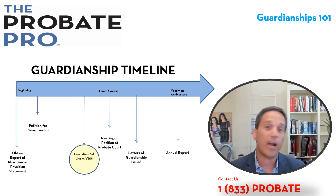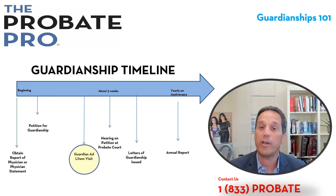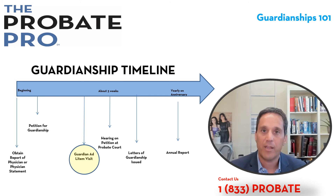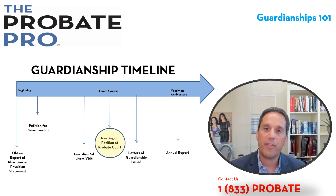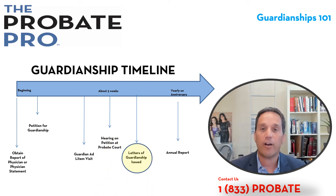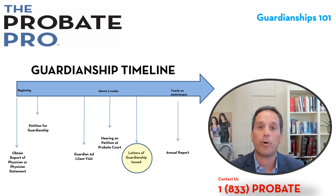Between the filing of the petition and the hearing, someone from the court called a guardian ad litem will go out and do a visit. A guardian ad litem is the eyes and ears of the court — they write a report and recommendation on the basis of the guardianship, allowing the judge to get more information about what's going on. From there, a hearing occurs in front of a judge, who makes a determination on whether there's a need for a guardian based on clear and convincing evidence brought forth by the petitioner.